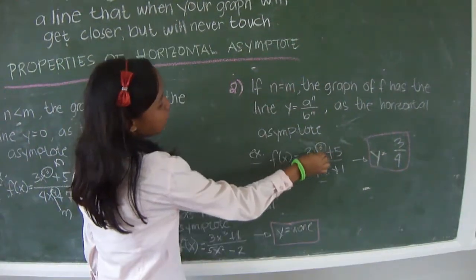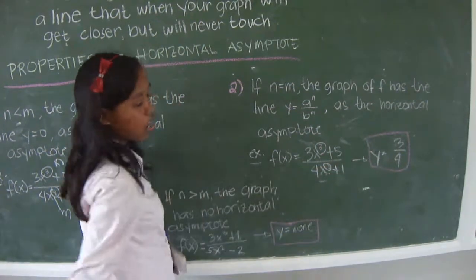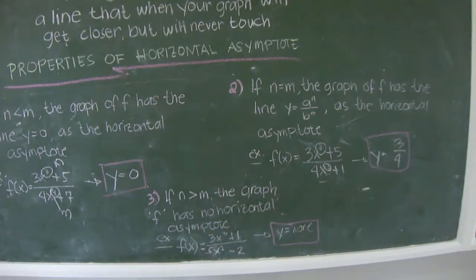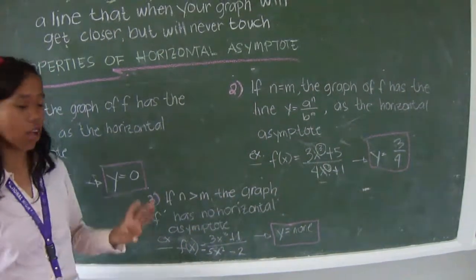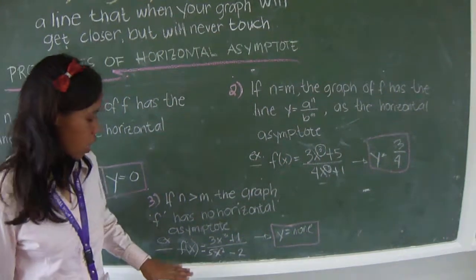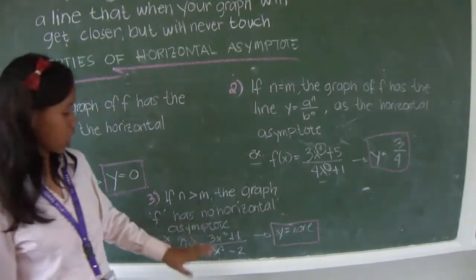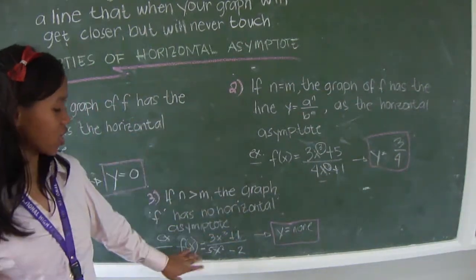This is the n and this is the m. Property number 3, if n is greater than m, the graph has no horizontal asymptote.